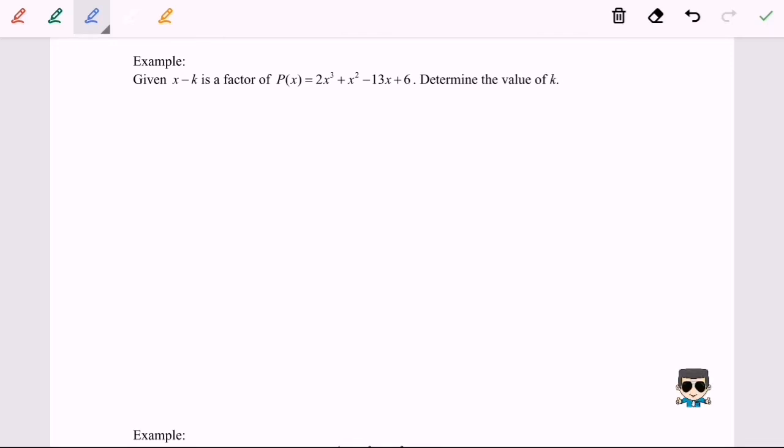For example, P(1). If we substitute p equals to 1, we will have 2 plus 1 minus 13 plus 6. P(1) will be equal to negative 4, which is not equal to 0, meaning that x minus 1 is not a factor.